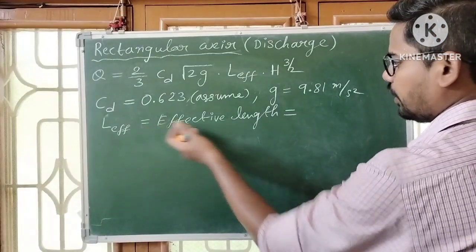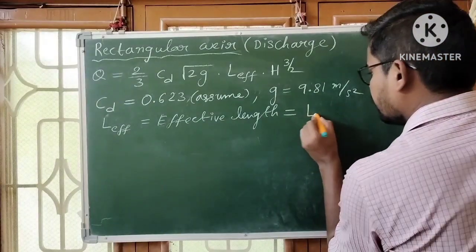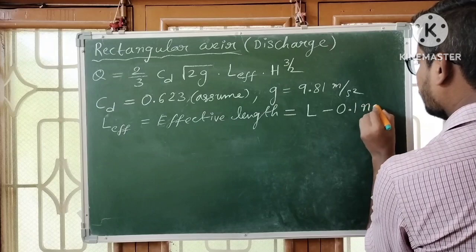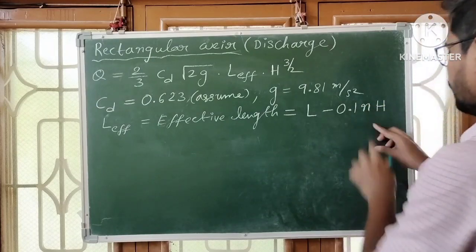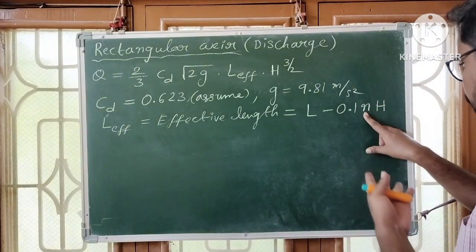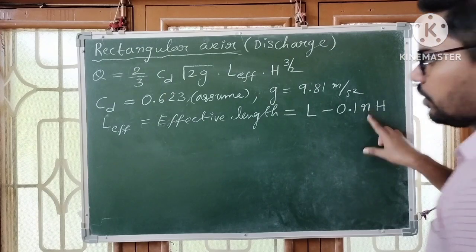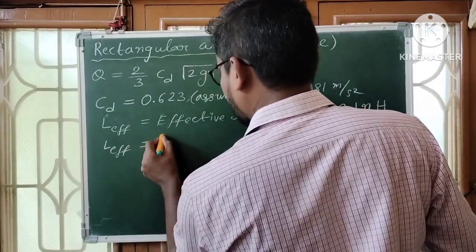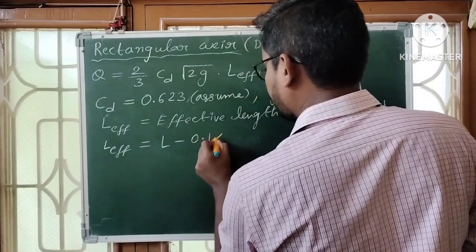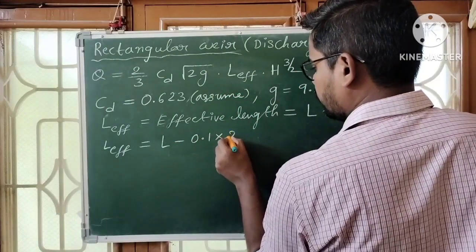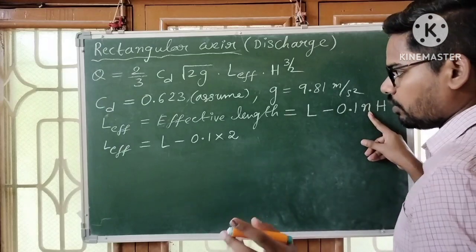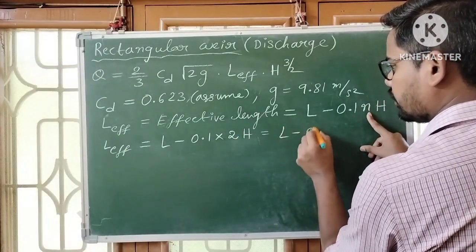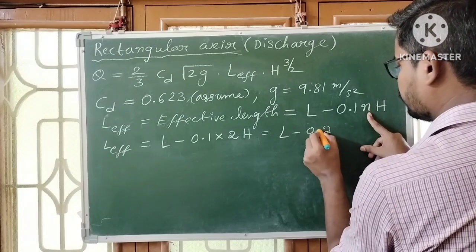The effective length L_eff is equal to L minus 0.1 into N into H, where N is the number of end contractions. Since the number of end contractions is 2, L_eff equals L minus 0.1 into 2 into H, which gives L minus 0.2H.